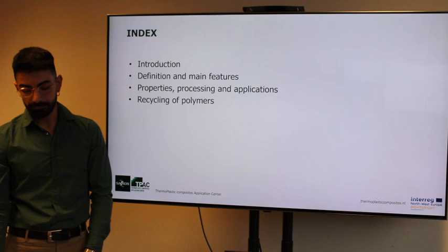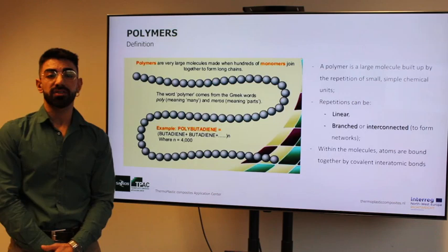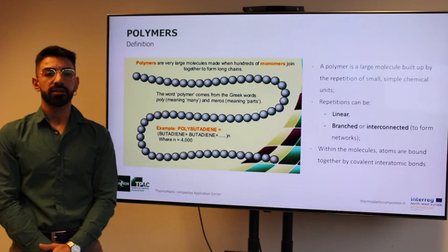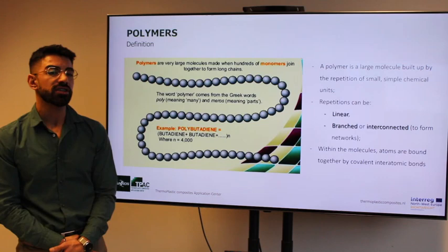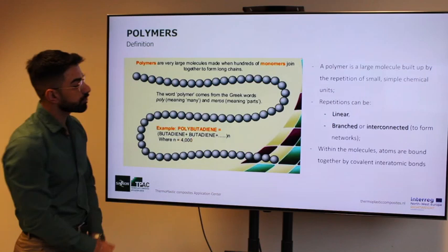What are polymers exactly? Polymers are very large molecules made when hundreds or thousands of monomers — also called repeat units — join together to form long chains. A big molecule is basically built up by the repetition of more simple chemical units called monomers. These small circles in the picture are the monomers, and hundreds or thousands of these give a polymer.